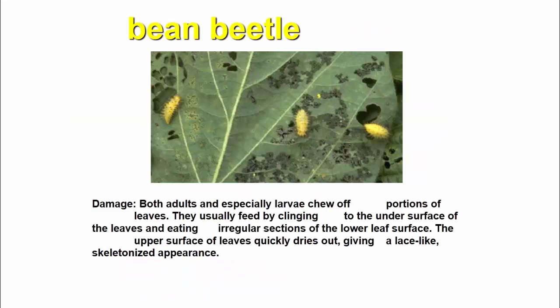Both adults and especially larvae consume portions of the leaves. They usually feed by clinging to the undersurface of the leaves, eating irregular sections of the lower leaf surface. The upper surface quickly dries out, giving a lace-like skeletonized appearance.